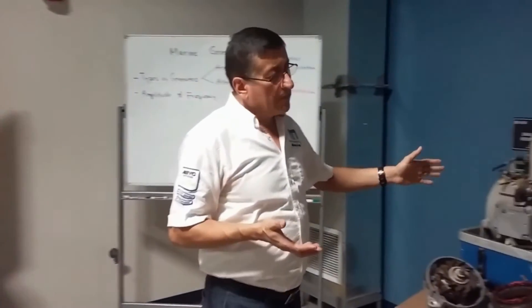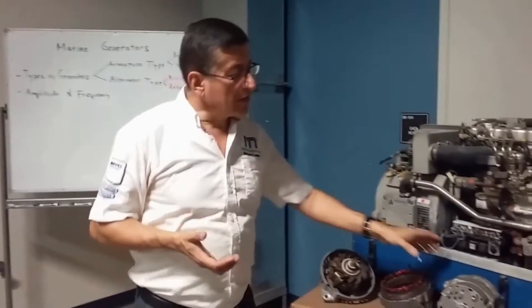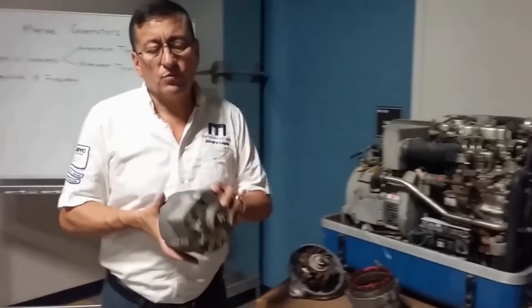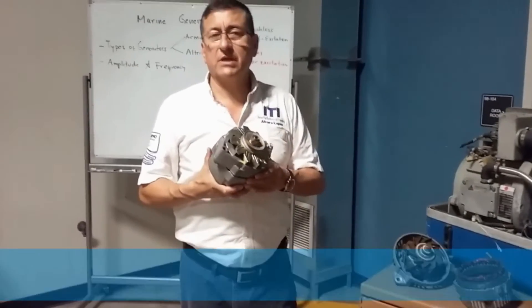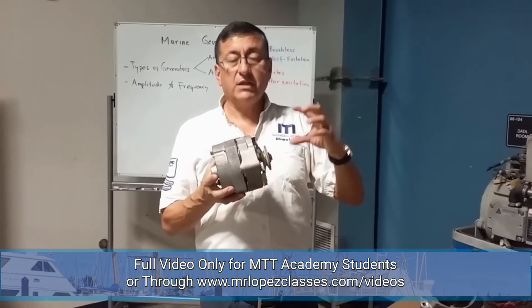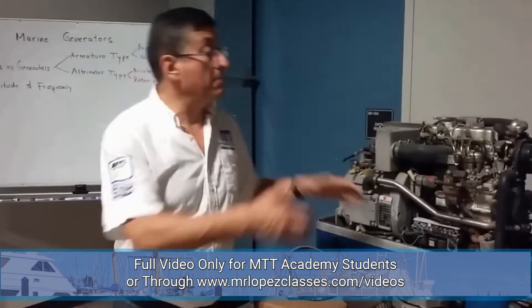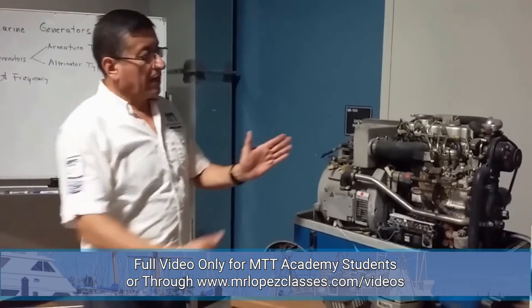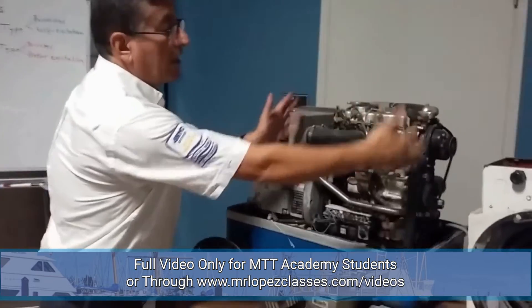The generator is basically the same as the alternator we studied in previous chapters. The alternator is equipment that takes mechanical power as input and produces electricity as output. In this particular case, the alternator produces DC current — and the generator is basically a big alternator.